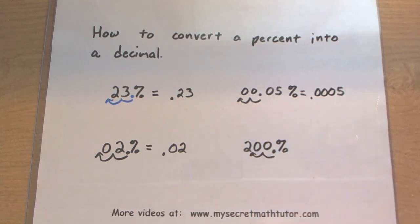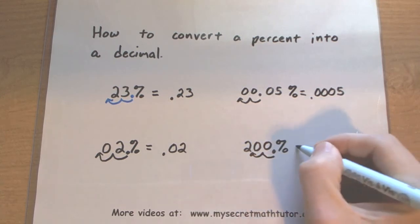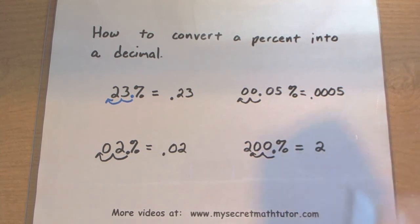So now the decimal is going to be right after the 2. So this is equal to just 2. And I don't need to write these zeros since they would essentially be after the decimal.